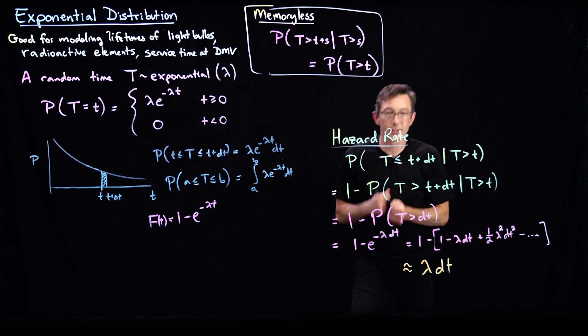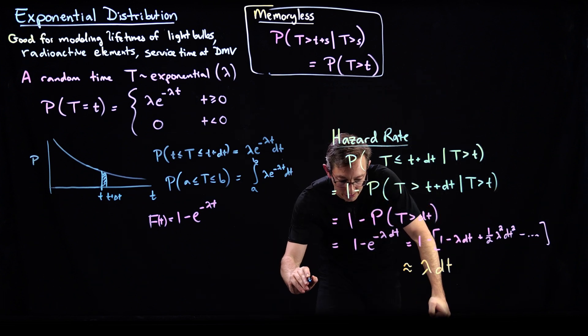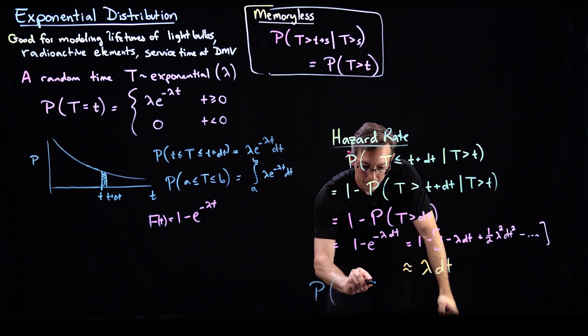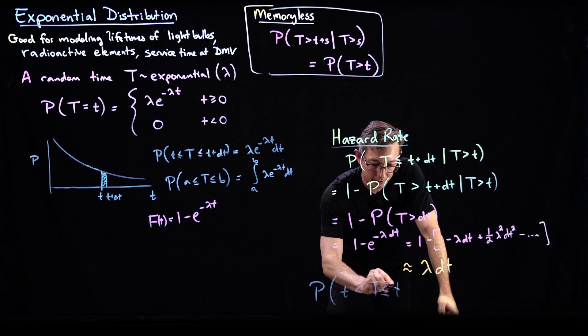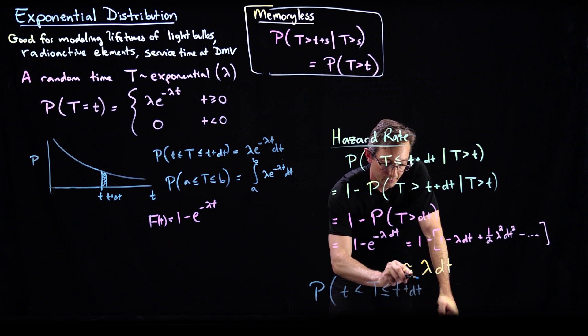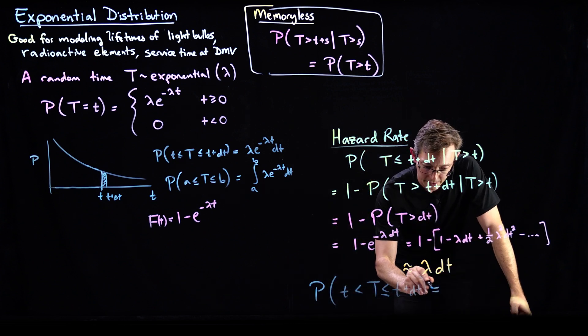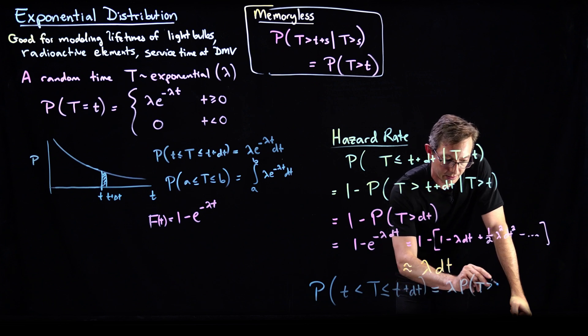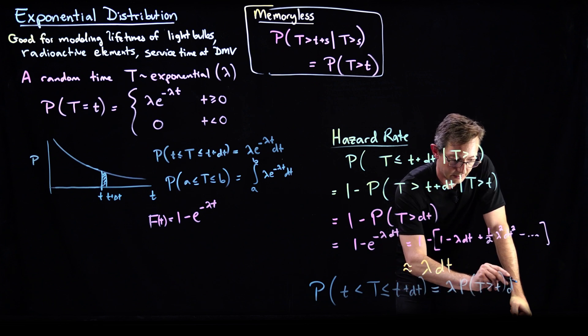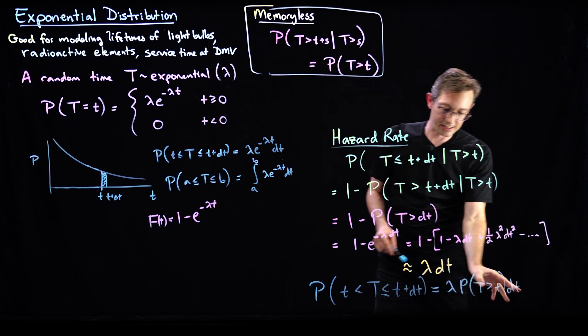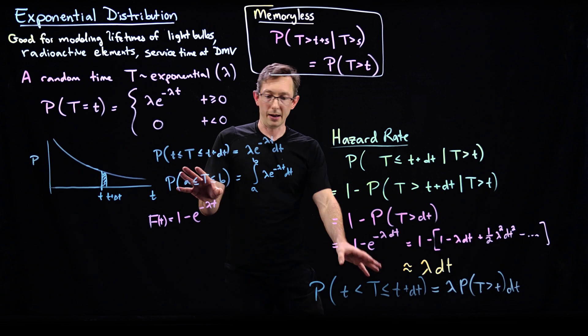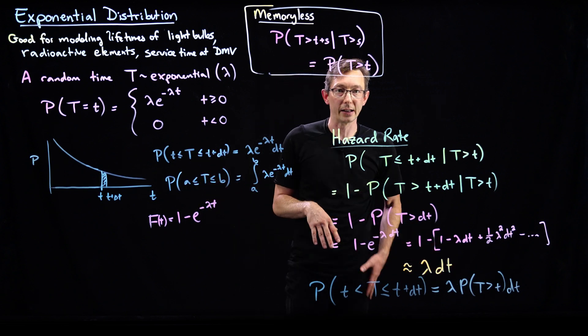And so in other words, the way we would write this is that the probability of T being between little t and little t plus dt is equal to lambda times the probability of big T greater than t dt. Okay? So this is kind of an outfall. And you probably want to pause and think about why this is true, based on this reasoning here.